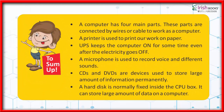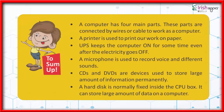Summary: A computer has four main parts, connected by wires or cables. A printer is used to print our work on paper. UPS keeps the computer on for some time even after the electricity goes off. A microphone is used to record voice and different sounds. CDs and DVDs are devices used to store large amounts of information permanently. A hard disk is normally fixed inside the CPU box and can store a large amount of data.